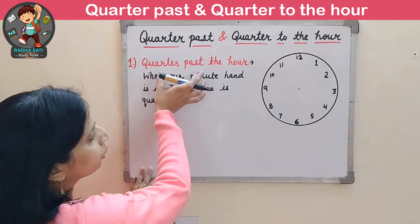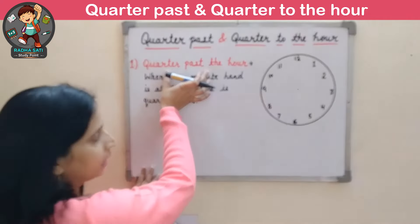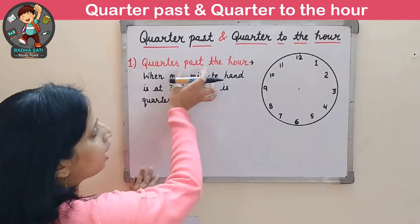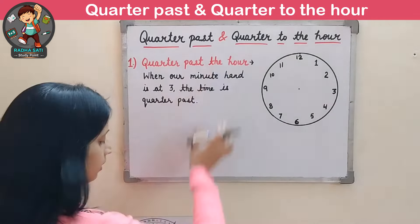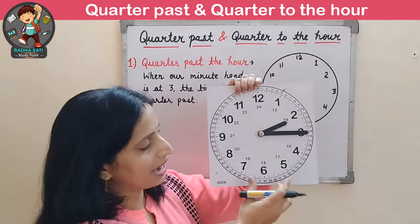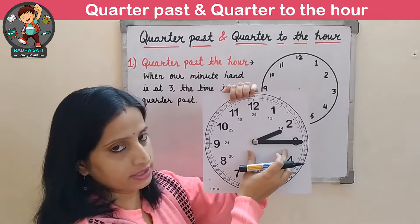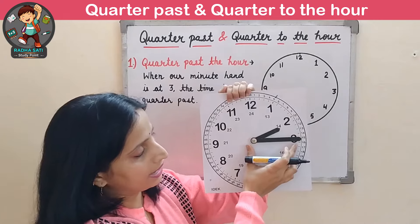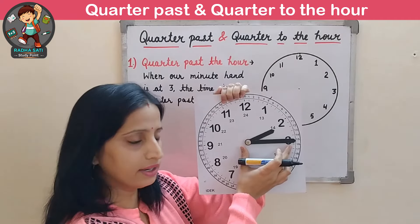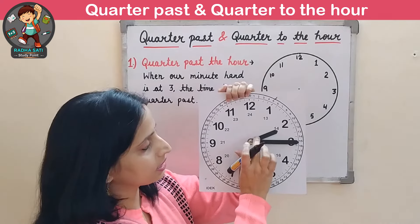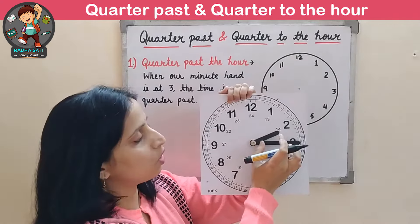First, I am going to introduce the concept of quarter past the hour, with the help of this analog clock. So this is an analog clock. It has two hands — this longer hand is called the minute hand, and this shorter one is called the hour hand.